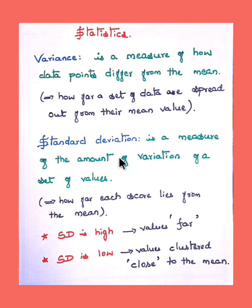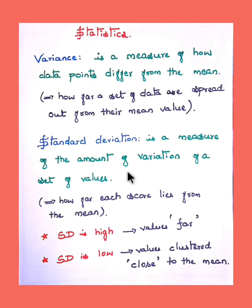That is the concept of variance. Now, standard deviation is a measure of the amount of variation of a set of values. Standard deviation, abbreviated as SD, tells us about the amount of variation in the given set of values. In Kannada it is called 'manaka vichalane'.